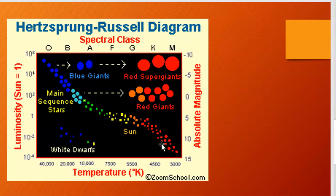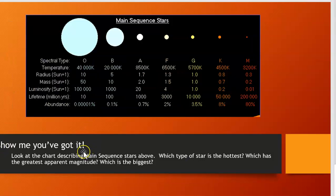Okay, so what I'd like you to do is show me what you know. Look at this chart describing main sequence stars. That's the category that the majority of stars fall into. Which type of star are you seeing as the hottest? Which has the greatest apparent magnitude? Which is the most massive or the biggest? Show me what you know.